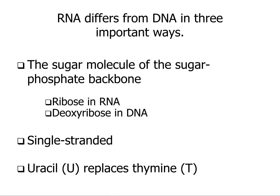RNA differs from DNA in three ways. First, the sugar phosphate backbone: RNA contains ribose rather than deoxyribose, hence the names ribonucleic acid and deoxyribonucleic acid. Second, RNA is single-stranded. Third, RNA contains uracil instead of thymine — it's really only a methyl group difference, but it is referred to as uracil.